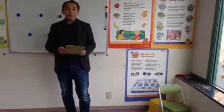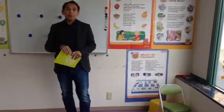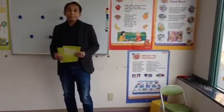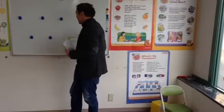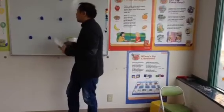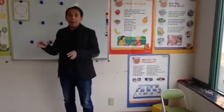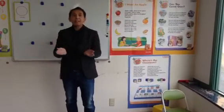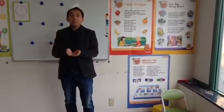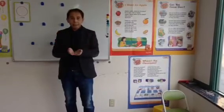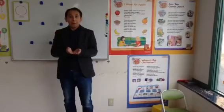So once you have done that, you're going to introduce the Total Physical Response. So for me, I'm going to say: put the picture there and say circle, repeat — circle. Very good.